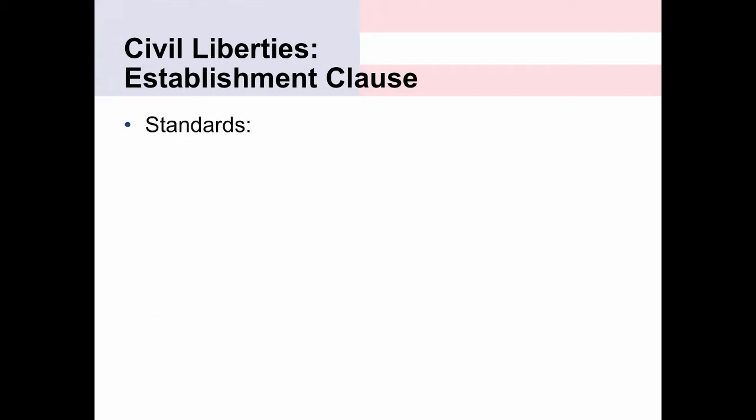Let's talk about standards. Standards are simply things used by the Supreme Court to balance the powers given to the federal government against the rights that individuals have. Regarding the Establishment Clause, one of the first efforts to establish a standard for determining what is and is not an establishment of religion was Lemon v. Kurtzman, a Supreme Court case decided in 1971. There are three parts of what we call the Lemon Test. A law has to pass all three of these tests in order to be considered constitutional. If the law fails any one of these parts, the law is deemed unconstitutional and is struck down or nullified.